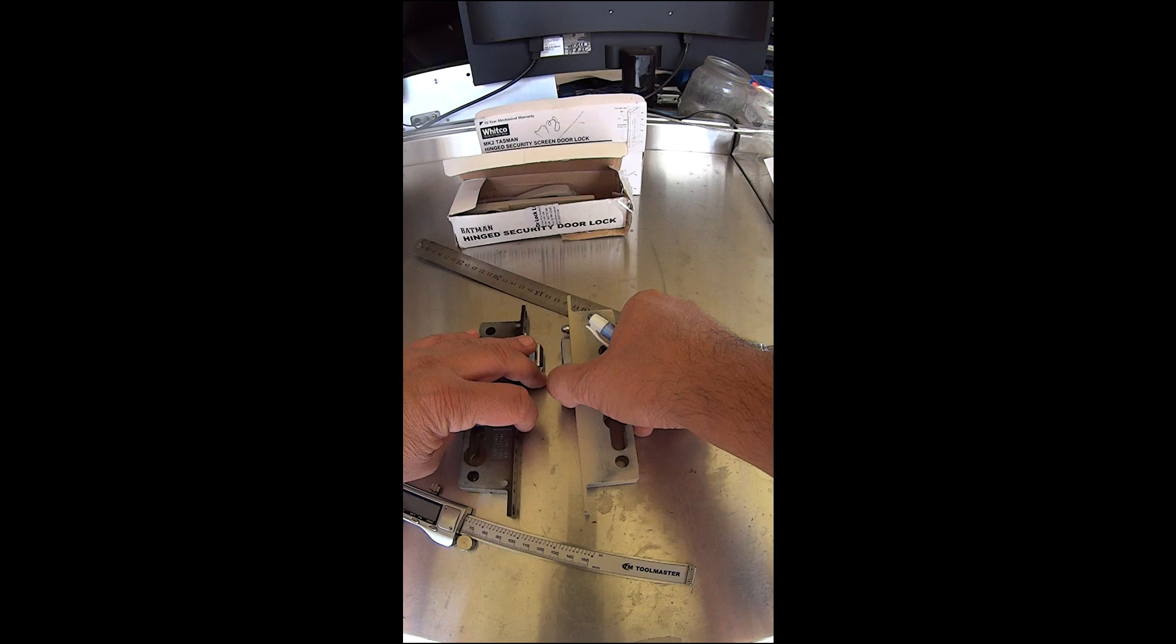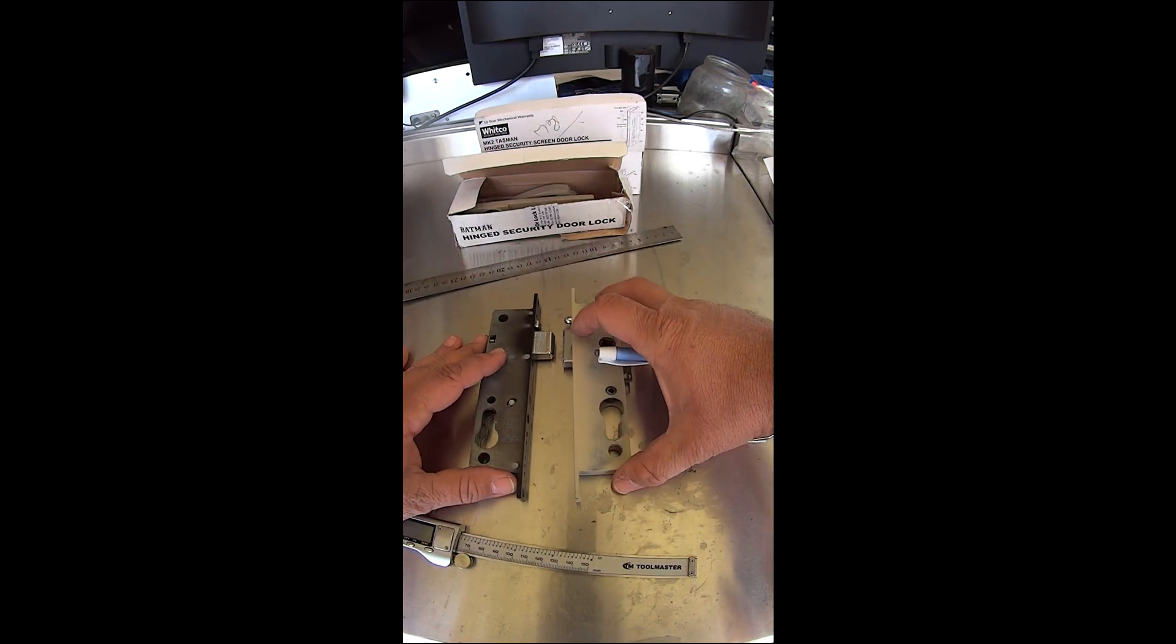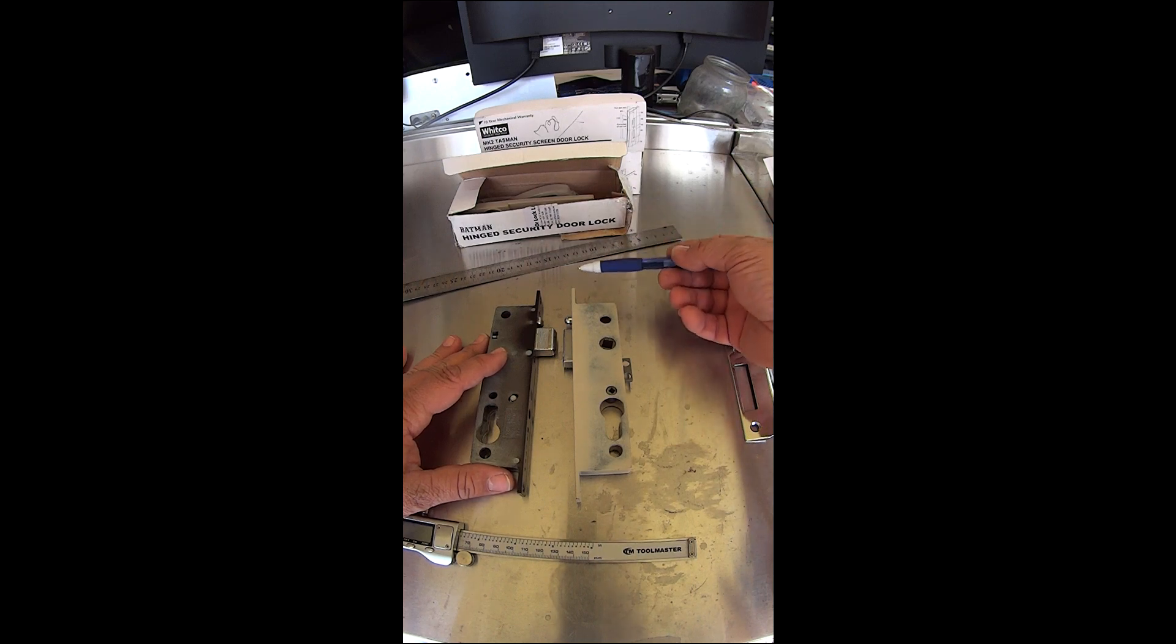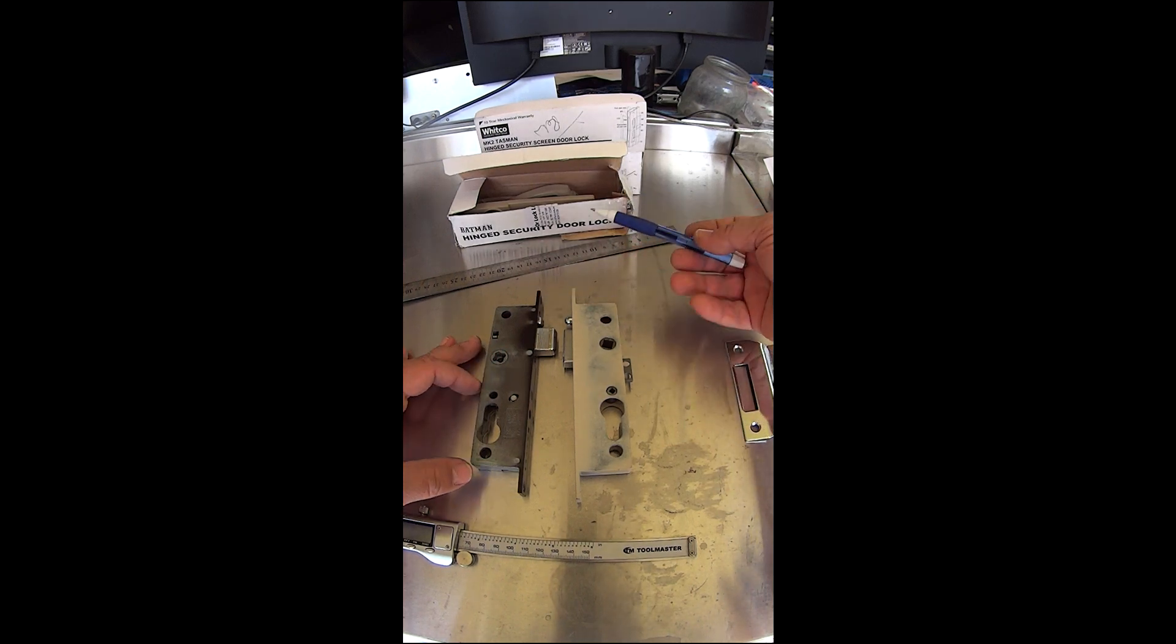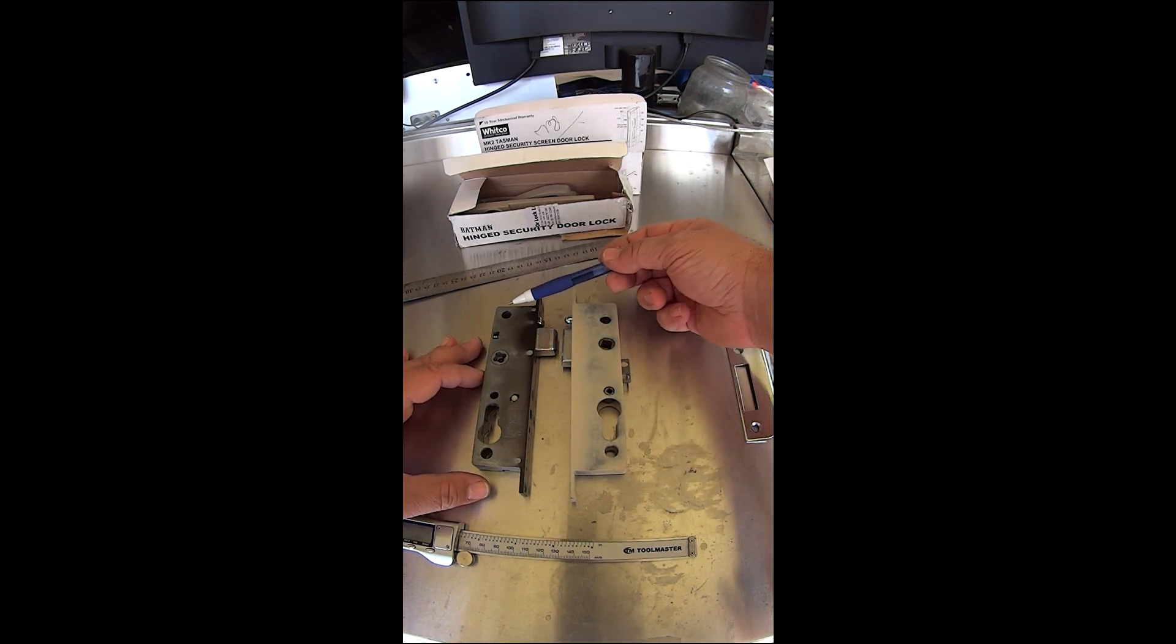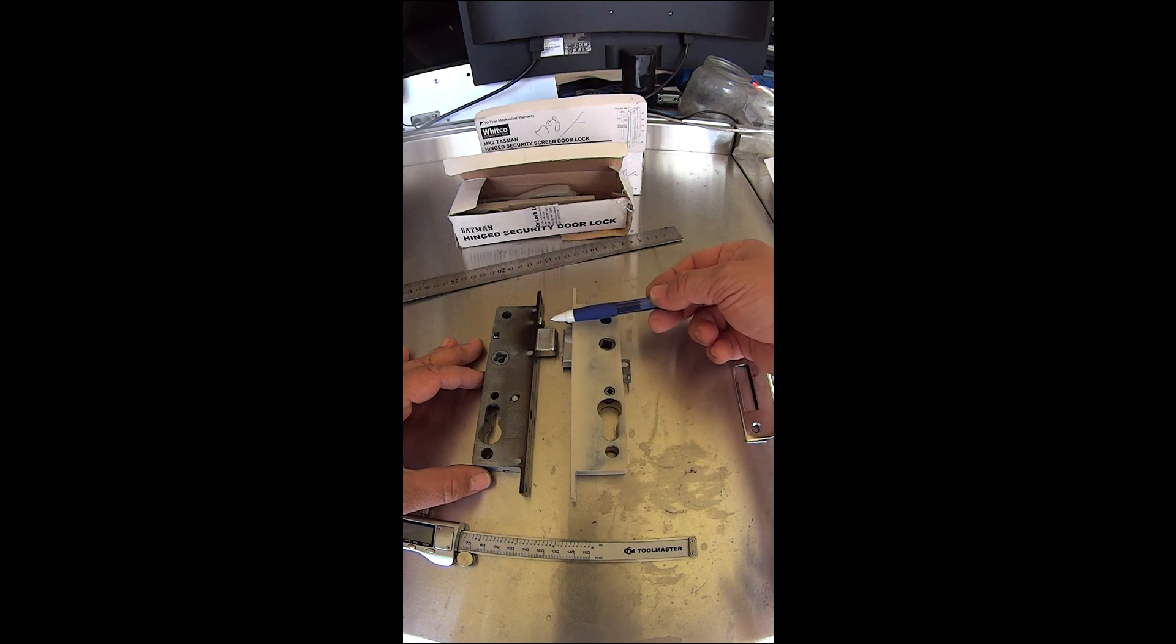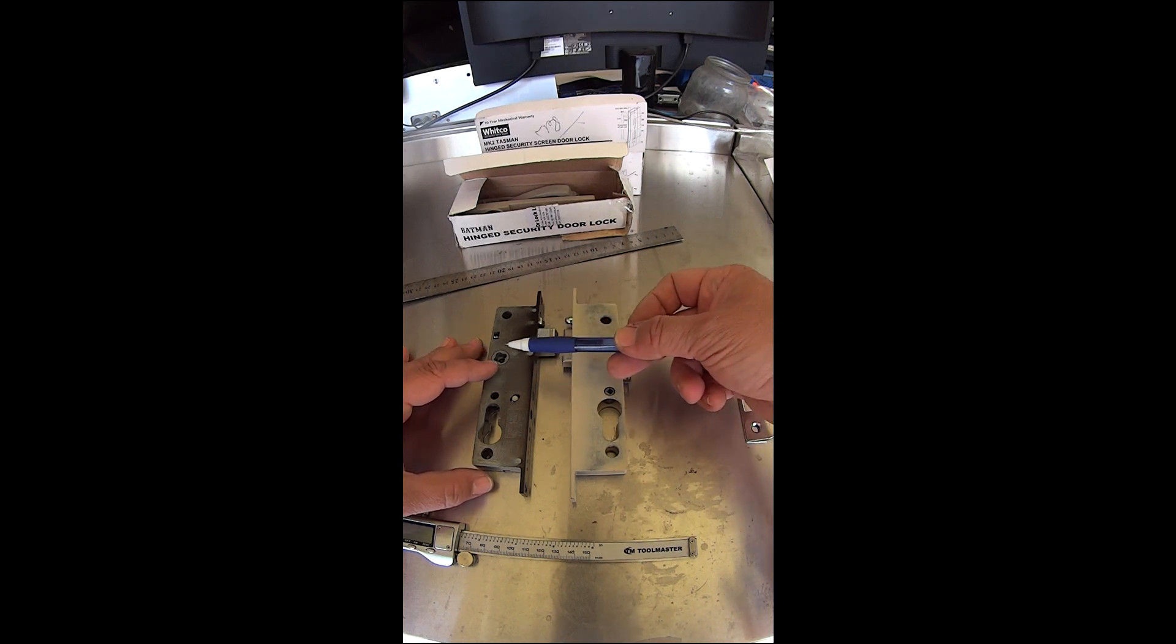Looking at the locks now they look quite close. If we line the top up here, our screw holes at the top line up, but our handle holes don't line up - the Witko one is higher. Our locking position here is slightly different as well and our spindle is in a different position.